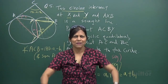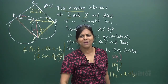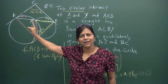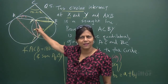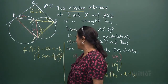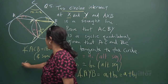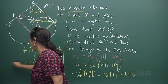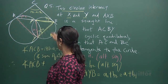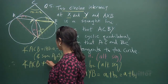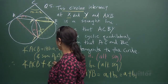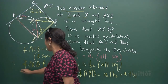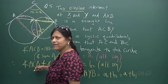You feel great because you've shown something which you thought was impossible — that is a cyclic quadrilateral. You've got it. So angle ACB plus angle AYB is equal to 180 degrees.